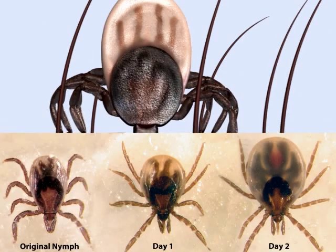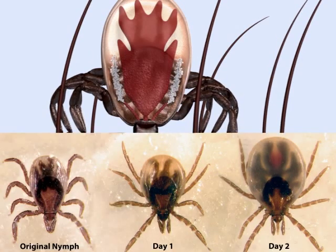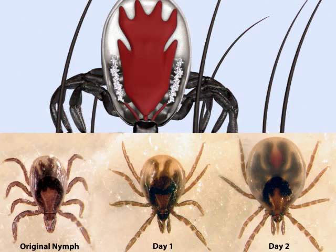By day two of attachment, Babesia sporozoites will have matured in the tick's salivary glands and are transmitted to the host as the tick salivates.